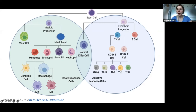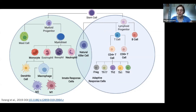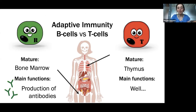Within the umbrella term of T-cells, you've got all these different subtypes that have been polarized through various cytokines to exert specific functions. For example, a hyperactive Th2 response can lead to allergies. T-regs are your T-regulatory cells - they simmer down the immune system. What differentiates B-cells from T-cells is that B-cells mature in the bone marrow and mostly exert their functions through antibodies.